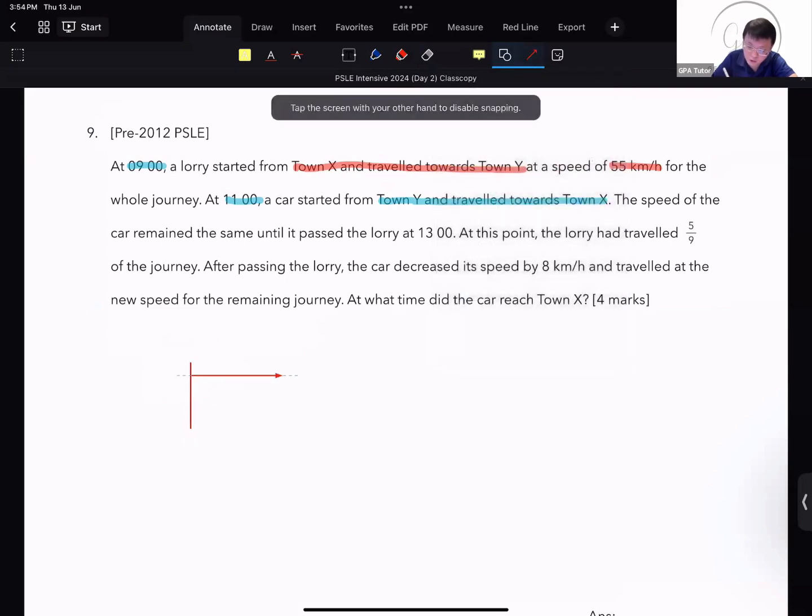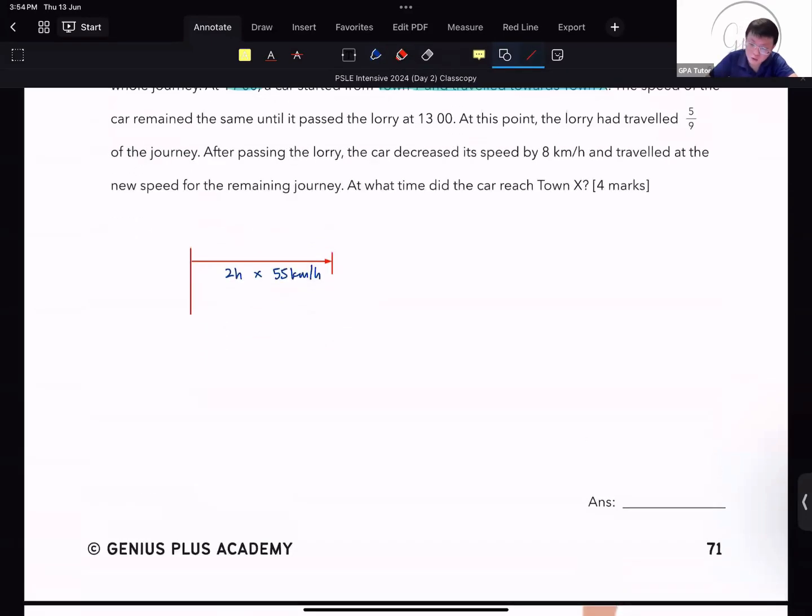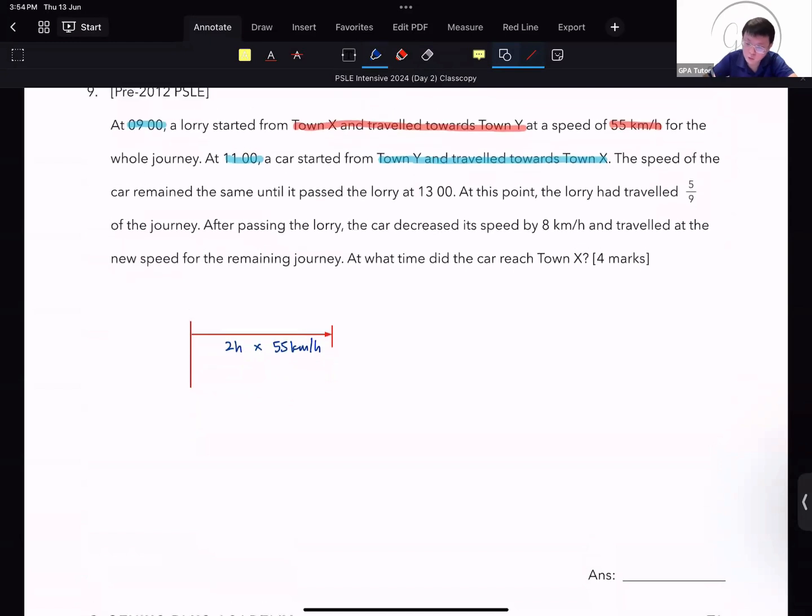At first, the lorry had a head start of two hours already. That is what you must figure out. So it's a two-hour head start. You multiply two hours by 55 km per hour. That is the distance of the head start that the lorry has. And then at this point, this will give you your distance traveled at the point where it's 1100. So this was 0900 starting from town X.